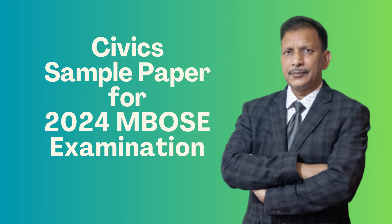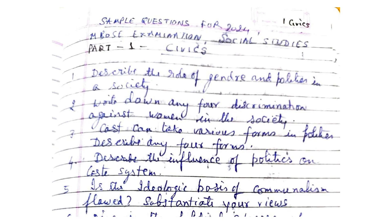Hello students, good morning. Today I'm going to give you simple questions for Social Studies Civics. Without losing time, let's start the questions. Describe the role of gender and qualities in a society. Write down any form of discrimination against women in society.